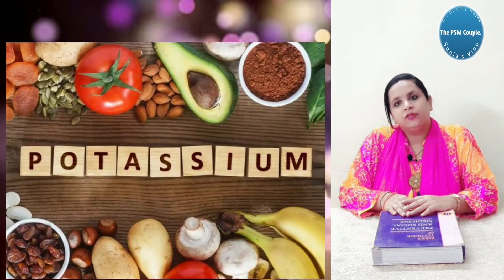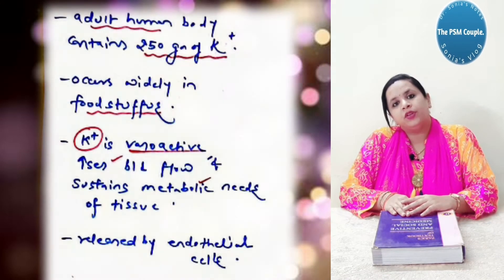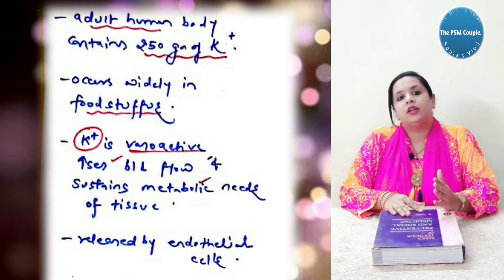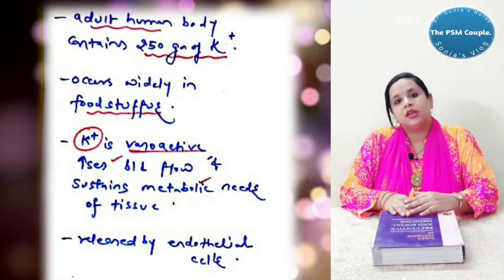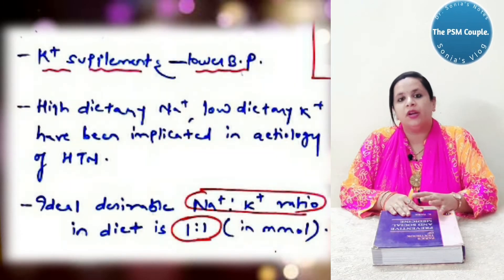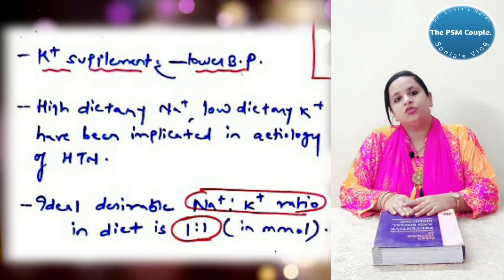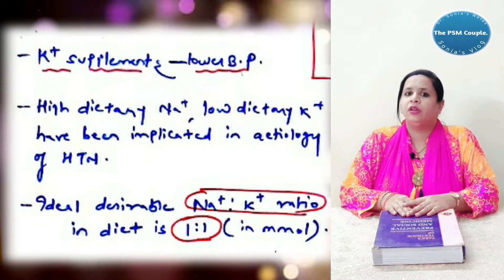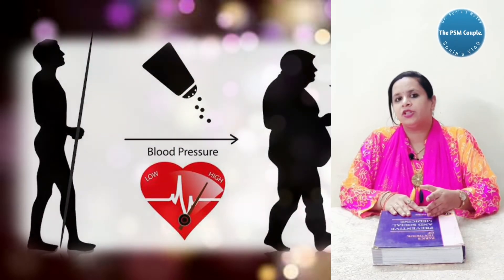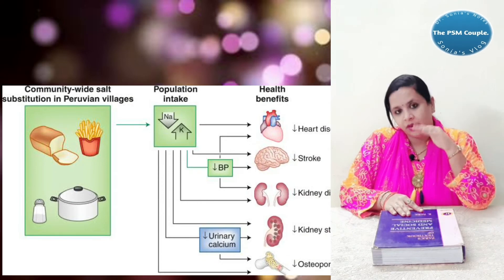The adult human body contains 250 grams of potassium and it occurs widely in foodstuffs. Potassium is vasoactive: it increases blood flow and sustains the metabolic needs of tissue. It is released by endothelial cells, and potassium supplementation helps in lowering the risk of blood pressure. High dietary sodium and low dietary potassium have been implicated in the etiology of hypertension. High sodium raises blood pressure, and low potassium also raises blood pressure. The ideal desirable sodium-to-potassium ratio is 1 to 1 millimole in the diet.